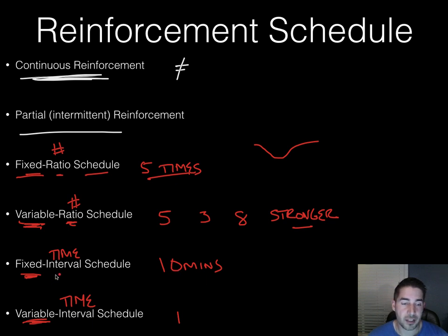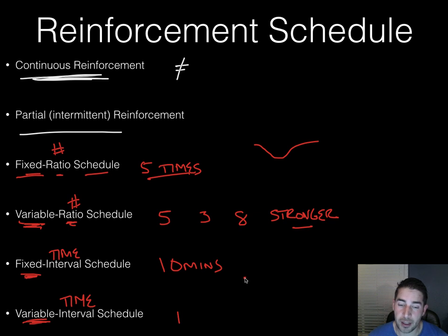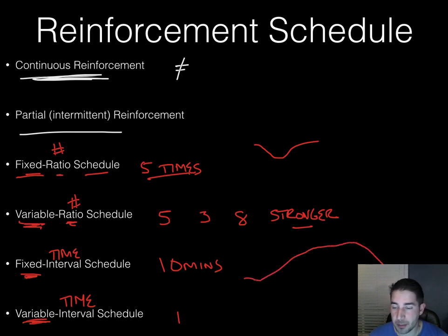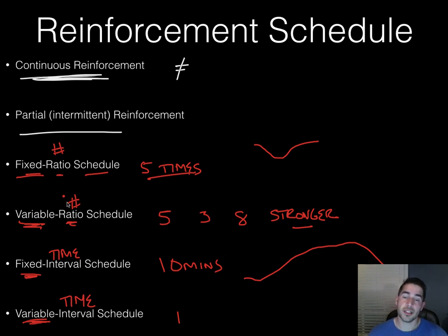With variable schedules, the key is that you're doing the behavior when the time or the number is up, but you don't know when that will be. The idea is that by being variable, you'll continue doing the behavior more often because you never know when reinforcement is coming.